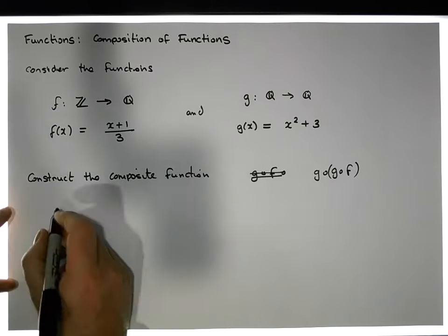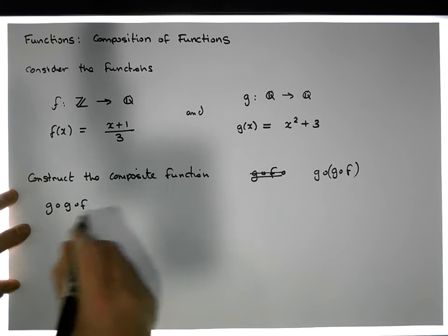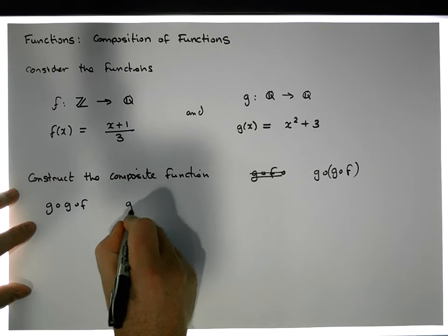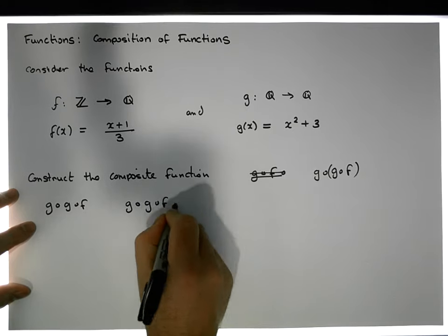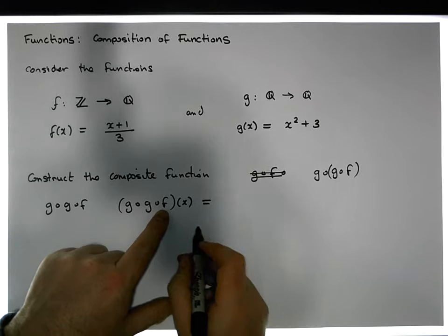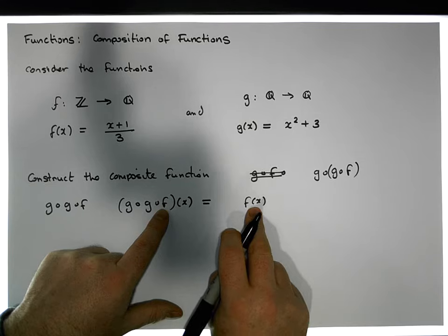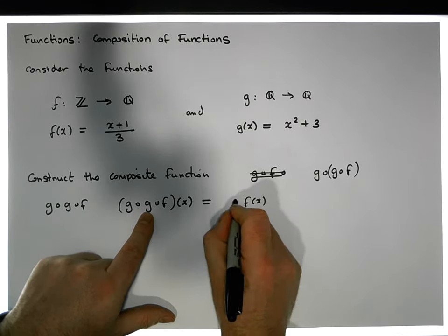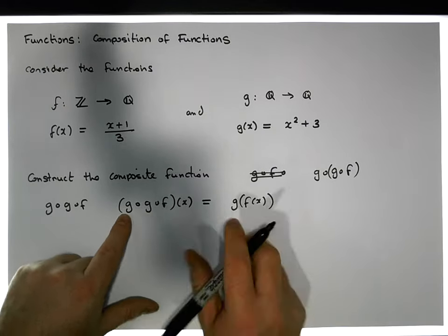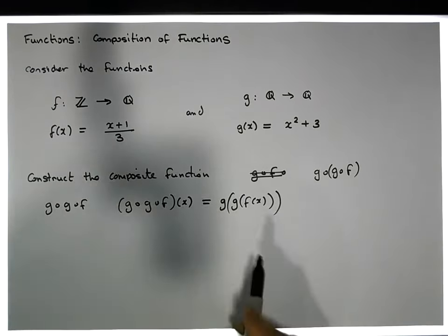From a notation perspective, we want to construct g∘g∘f of x. To evaluate this, we evaluate f(x) first, then pass the output of f(x) into g to get g(f(x)), and then pass that output into g again to calculate g of that result.